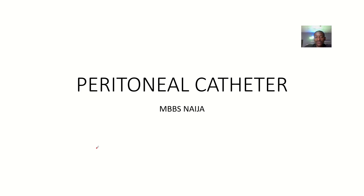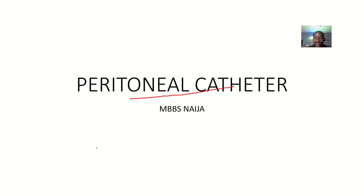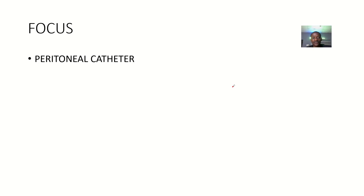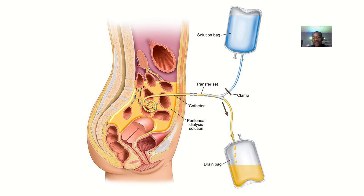Let's quickly look at another type of catheter known as a peritoneal catheter. Like I told you guys, most of the catheters we have, the names they carry are gotten from the part of the body where you'll be inserting the catheter. The name being peritoneal catheter tells you this is a type of catheter that you're basically inserting in the peritoneal cavity.